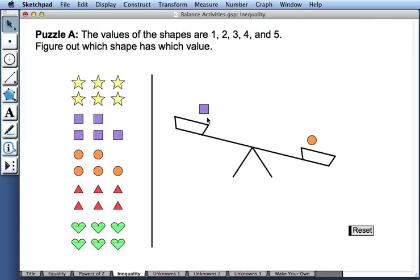That gives me some information about the possible values for the square and the circle. By continuing to drag shapes and keeping track of the information, I can figure out the value of all five shapes.